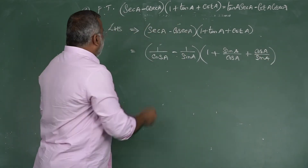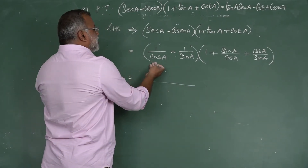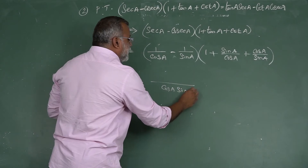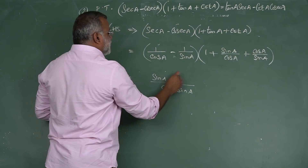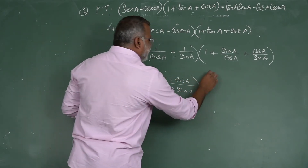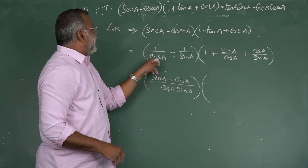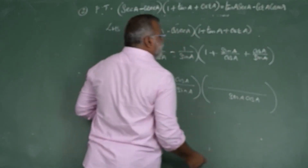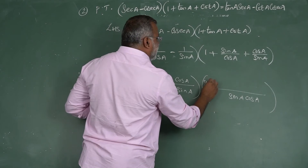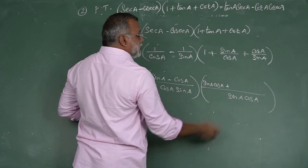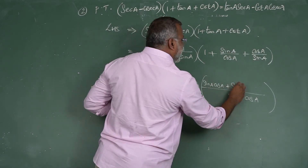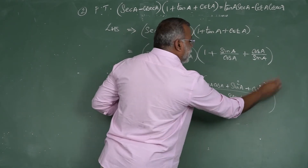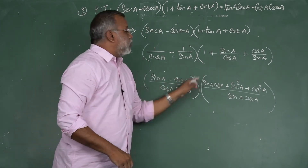In the first factor, the denominator has cos A and sin A, so take LCM = cos A · sin A. This gives (sin A - cos A)/(cos A · sin A). For the second factor 1 + sin A/cos A + cos A/sin A, the LCM is also sin A · cos A. Expanding: 1 · sin A cos A + sin²A + cos²A, all over sin A cos A.